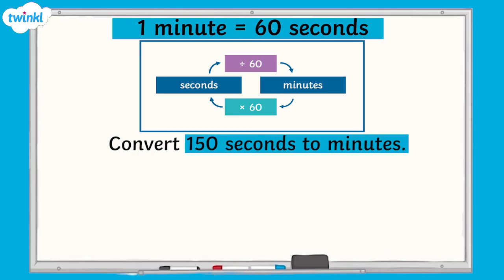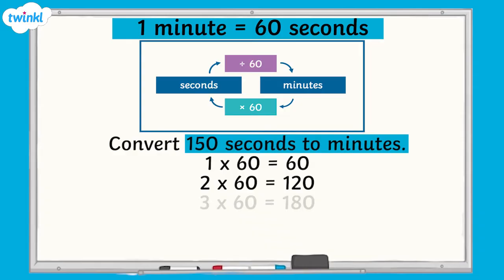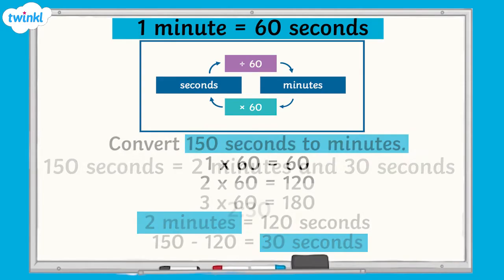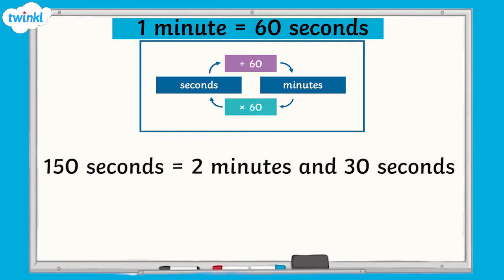But what happens if we don't have a number of seconds that is exactly divisible by 60? For example, how would we convert 150 seconds to minutes? We would need to think how many 60s are in 150. One lot of 60 equals 60, two lots of 60 equals 120, three lots of 60 equals 180. So in 150 seconds, we have 2 whole minutes — 120 seconds — and 30 seconds left over. So 150 seconds is equal to 2 minutes and 30 seconds. We can also write this as 2 minutes 30.